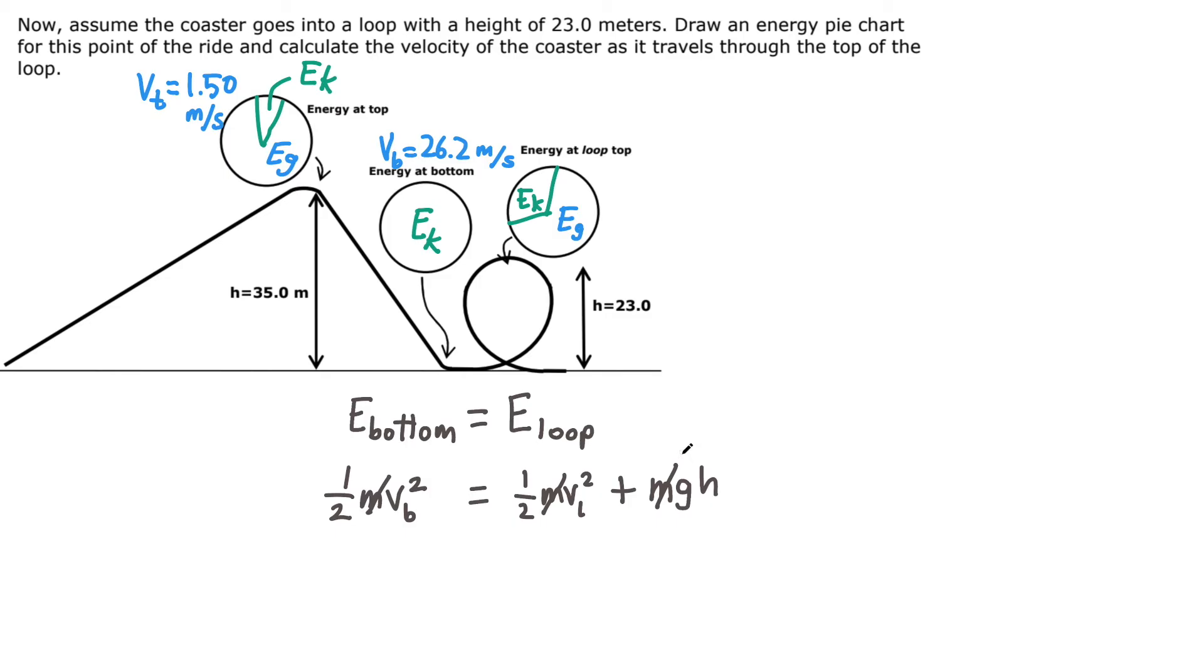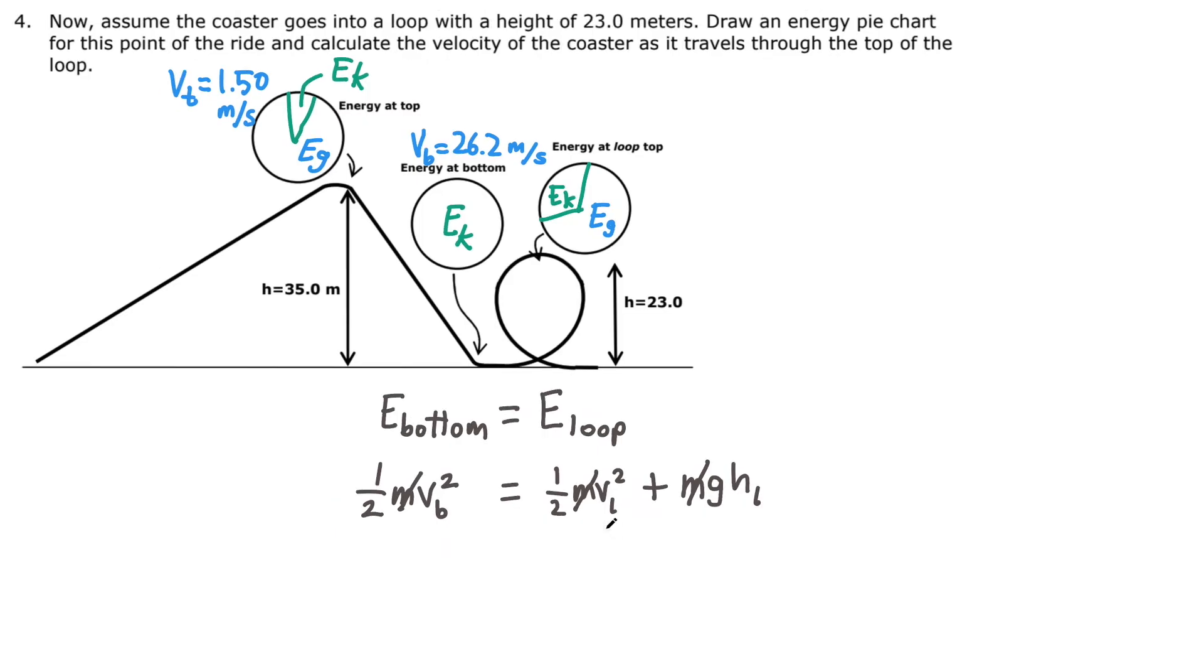Before I do the algebra to solve for the problem, I'll go ahead and put a subscript l on this height. I want to solve for the velocity at the top of the loop, so my first step is to subtract g times the height of the loop from both sides of the equation. That makes this term subtract to zero.